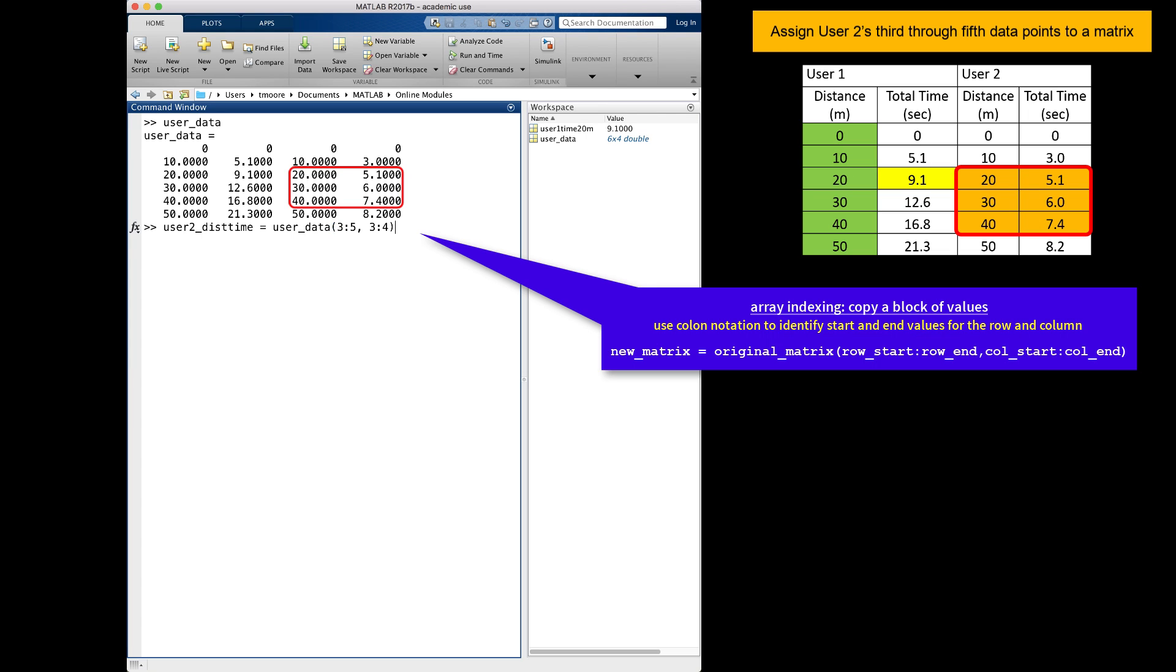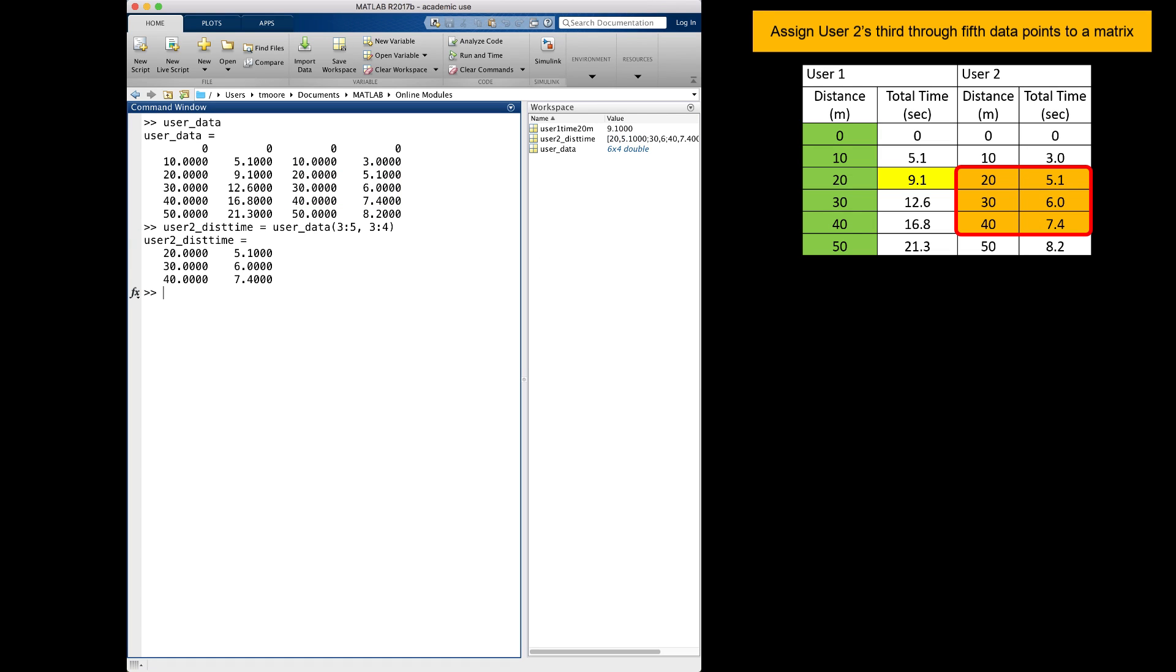We can assign all of the rows as a vector 3 colon 5, and all of the columns as a vector 3 colon 4, separated by a comma. When I hit enter, you see I have created a new matrix with the dimensions 3 by 2 with the values of the orange block on the right.